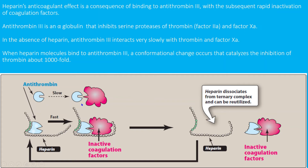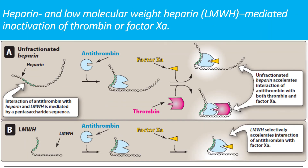As shown in this diagram, after binding, antithrombin 3 performs the same inactivation. Because the heparin's association with antithrombin 3 is not tight — it is a reversible binding — after it has done its job, the heparin is released. This free heparin then binds with another antithrombin 3 molecule and performs the same job again.